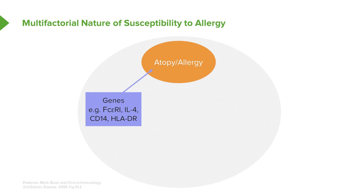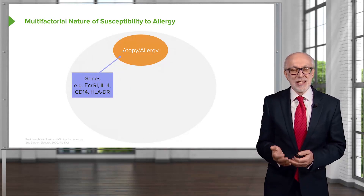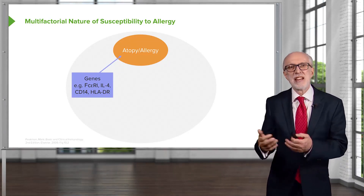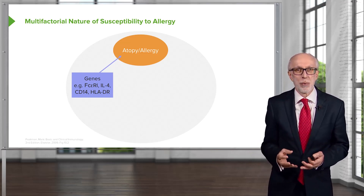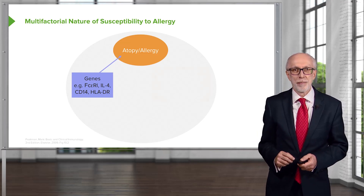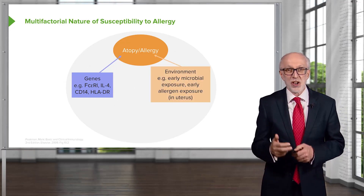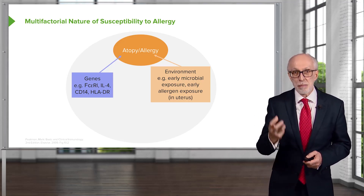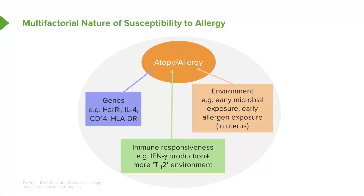It's really the combination of genes that's important, not any one single specific gene. The environment is also very important — it's not a purely genetic situation. Early microbial exposure and early allergen exposure, perhaps in the uterus, seem to play an important role. Immune responsiveness overall is abnormal, with decreased production of gamma interferon and perhaps a more Th2 type of environment, where Th2 cells secreting cytokines such as interleukin-4, interleukin-5, and interleukin-6 are the more dominant population.